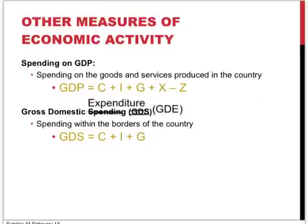Another distinction is the difference between spending on GDP and gross domestic expenditure. Spending on GDP is the spending on goods and services produced within the country — this would be consumption spending, investment spending, government spending, and spending on exports, minus the spending on imports, because imports were not produced within the country. Exports are sold outside of the country, but the spending on them should still be added as part of spending on GDP.